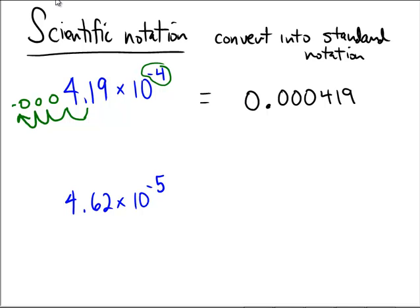Okay, for the second problem, we also have a negative exponent here, but it's a negative 5 this time. So with that decimal, instead of moving 4 spots like we did up here, we're going to move 5 spots. So 1,